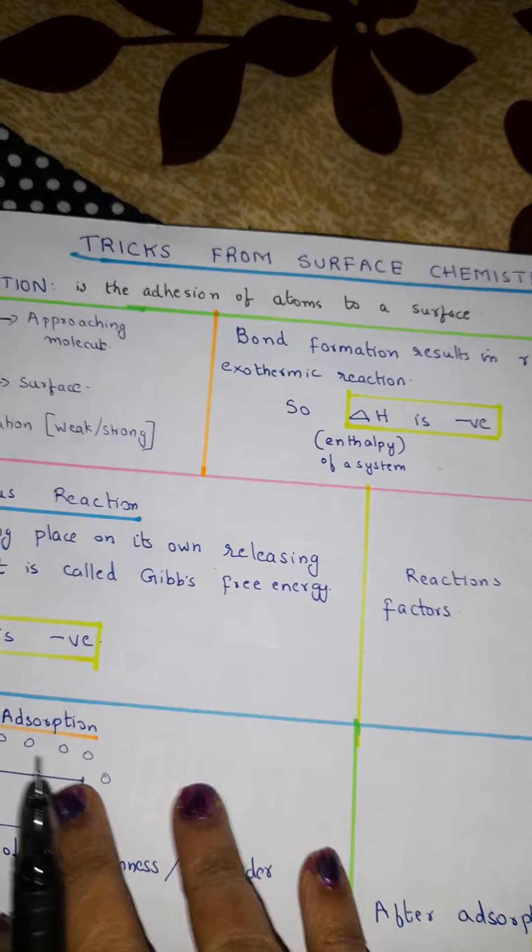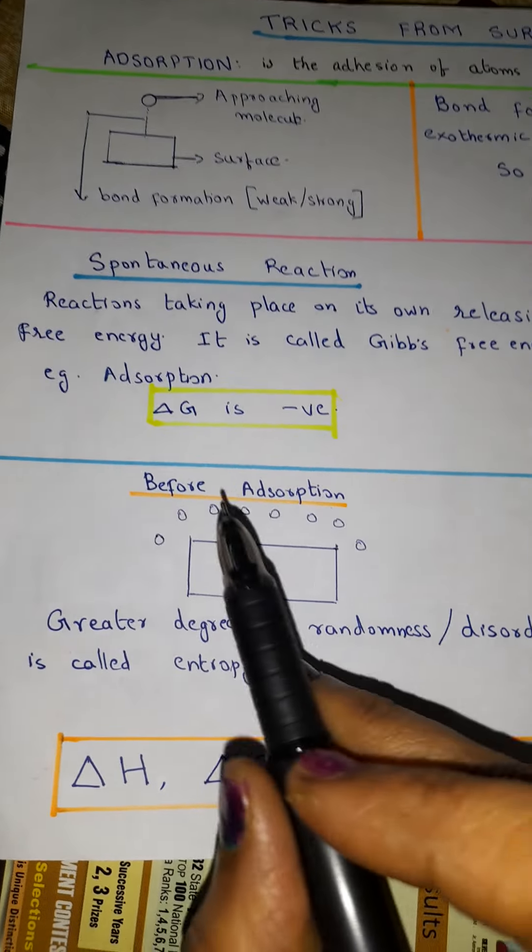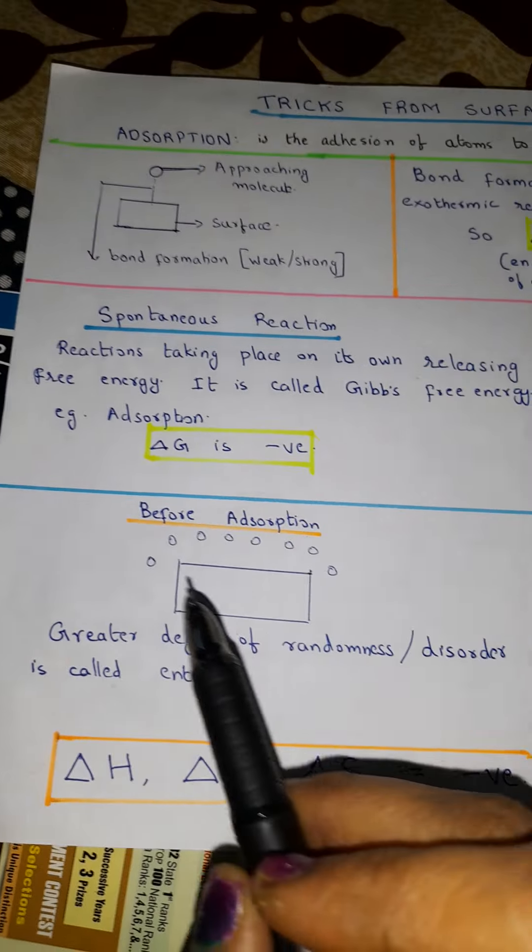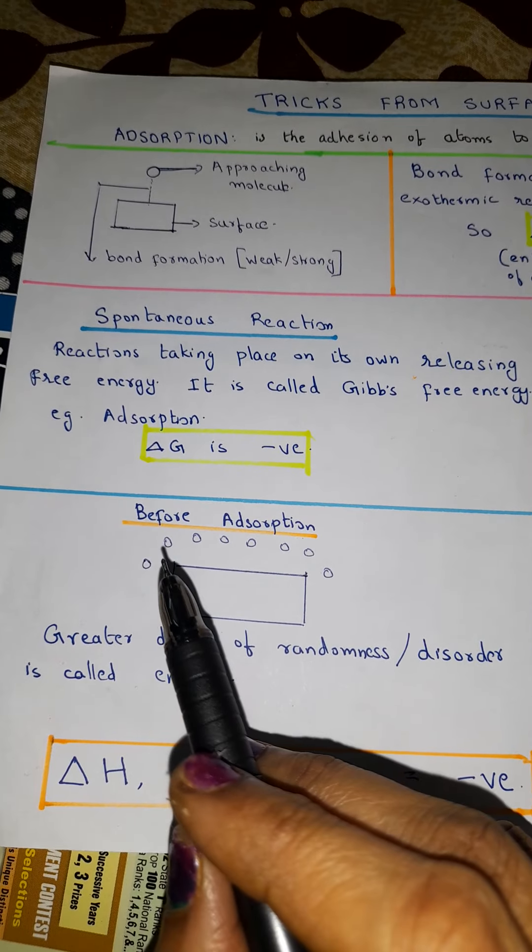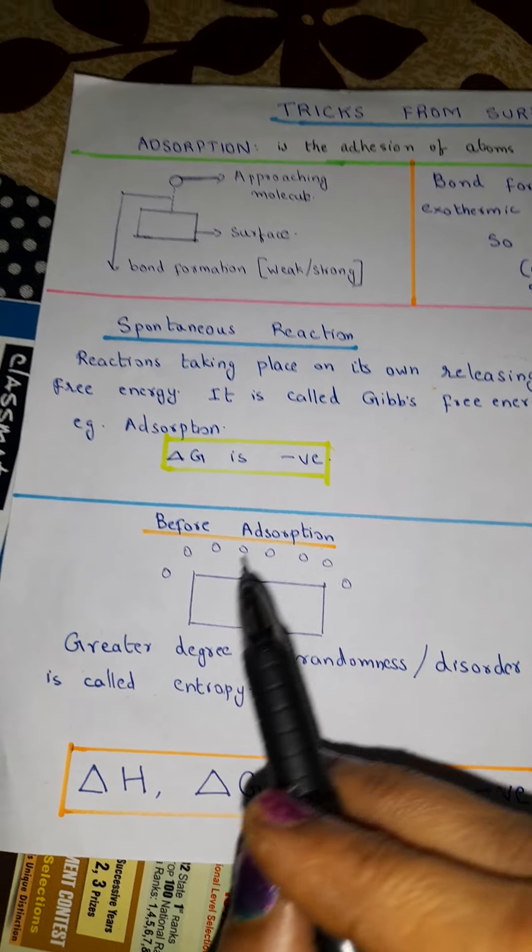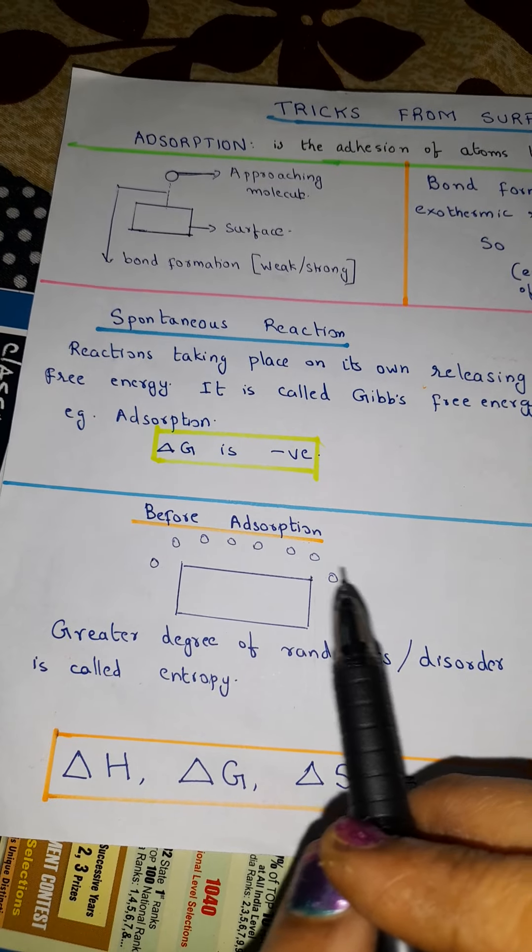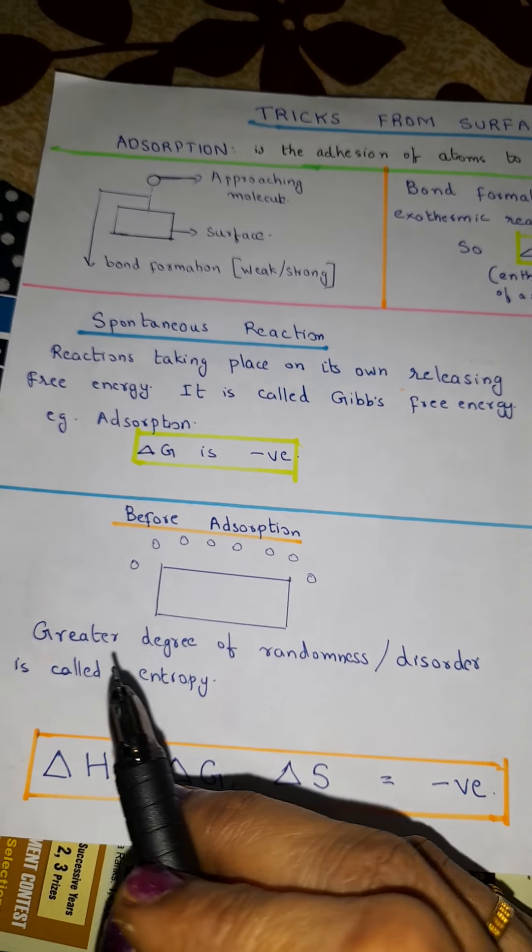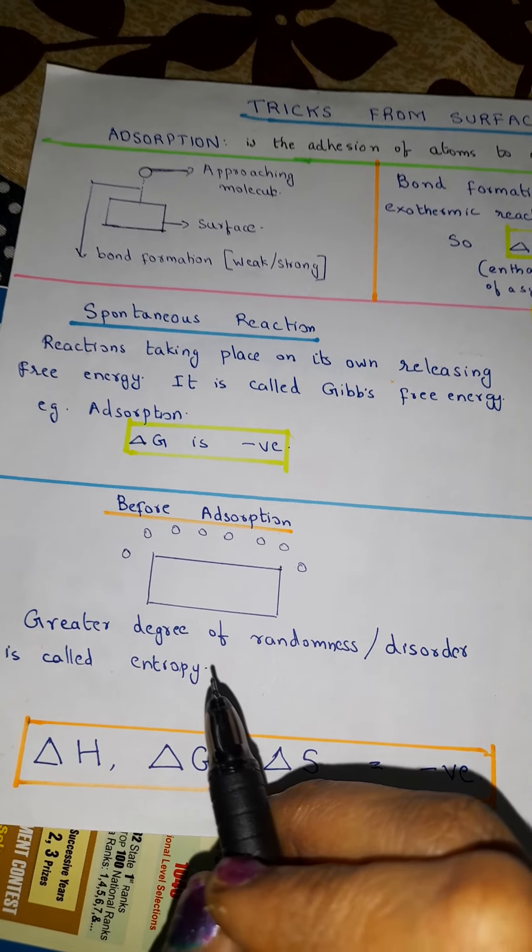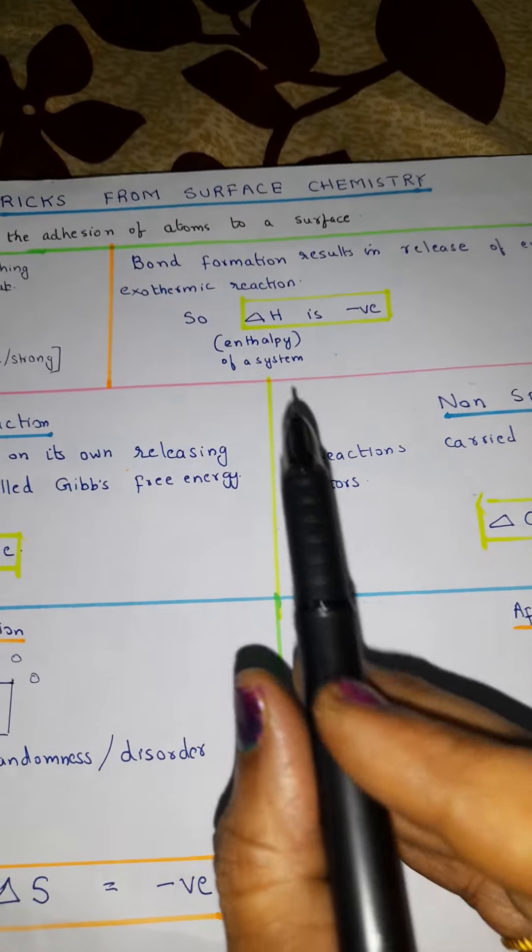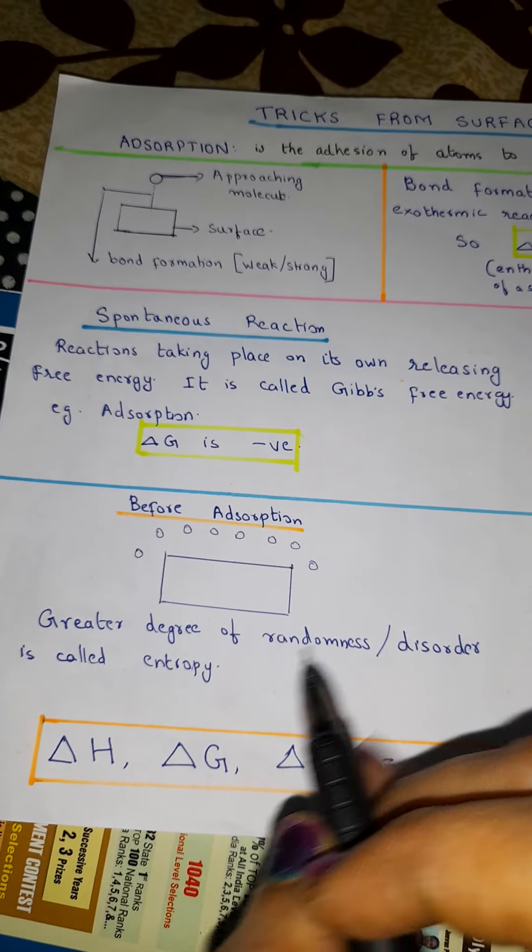So finally here I will show you that before adsorption, you can see that the molecules are arranged randomly. So you see it's in some sort of disorder. It's not a neat arrangement. So here greater degree of randomness or disorder, we call it entropy. So remember enthalpy and entropy are different.